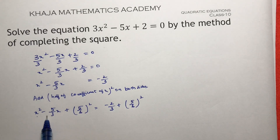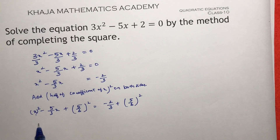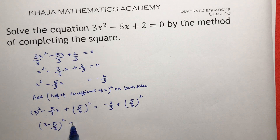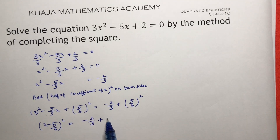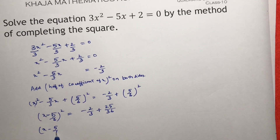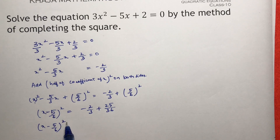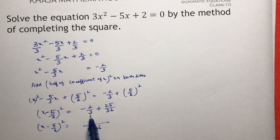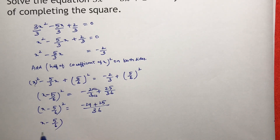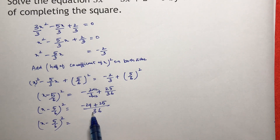Now it will be in the form a² minus 2ab plus b², which is (a minus b)². Here a is x and b is 5/6. So we can write this as (x minus 5/6)² equals minus 2/3 plus 25/36. The LCM is 36, so minus 24 plus 25, giving (x minus 5/6)² equals 1/36.